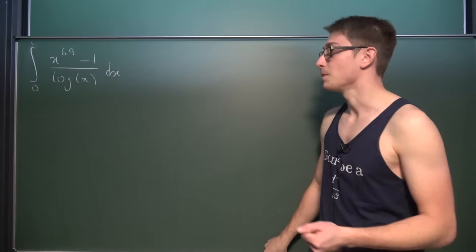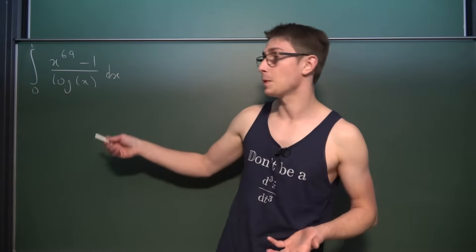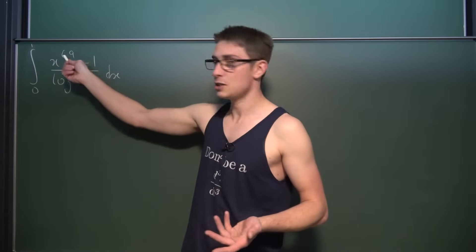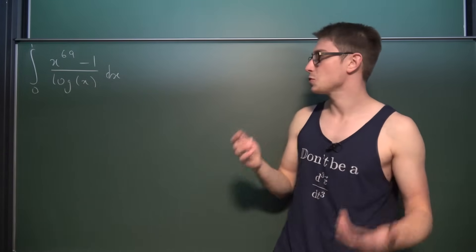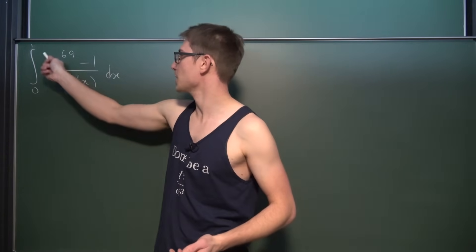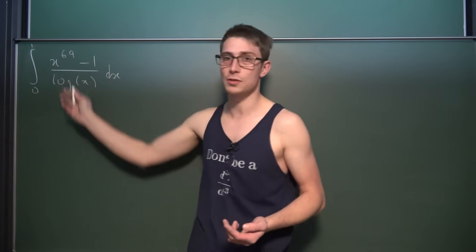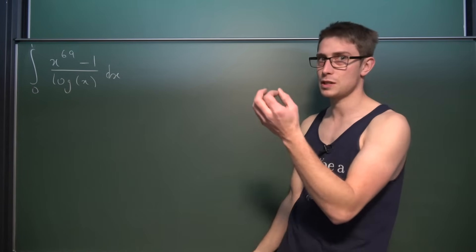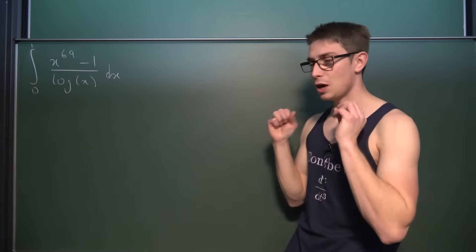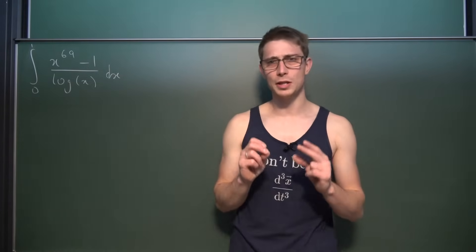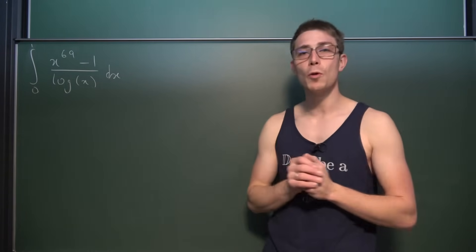Now, if you use regular techniques you won't get anywhere. Integration by parts gives you the trouble of differentiating 1 over the natural log of x — an absolute bloody mess. If you try substitution, say substituting x to the sixty-ninth power minus 1 for t, implicit differentiation leaves you with a factor of x to the sixty-eighth power, giving something like the sixty-ninth root — not nice.